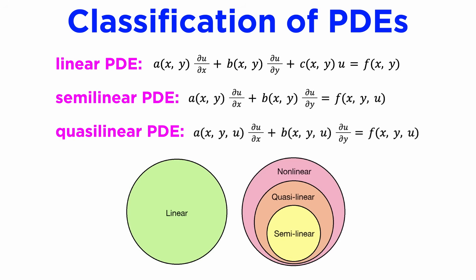The general forms of linear, semi-linear, and quasi-linear first order PDEs are shown here, with the Venn diagram showing the hierarchy.